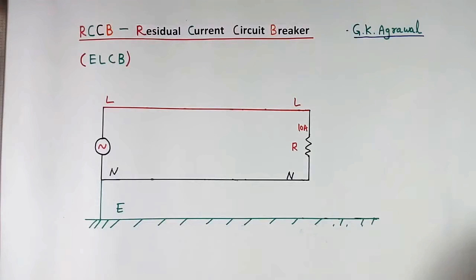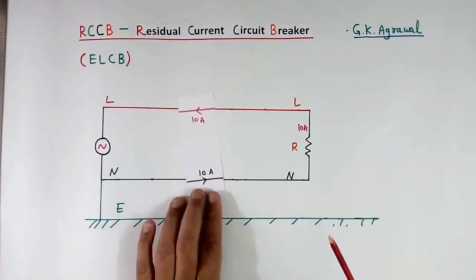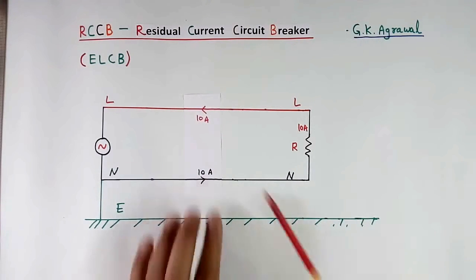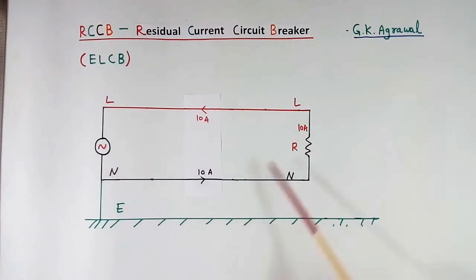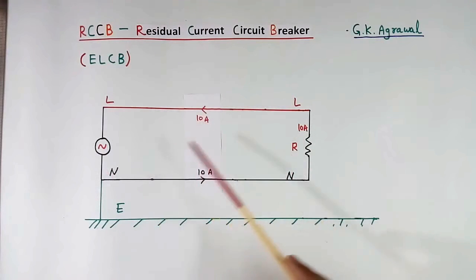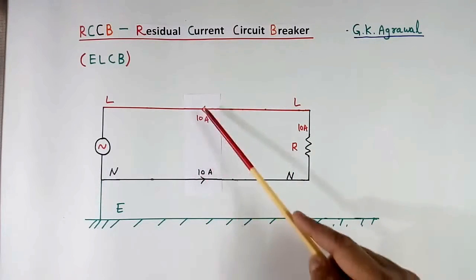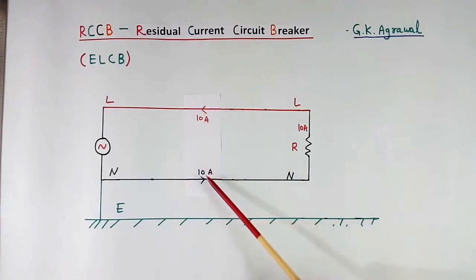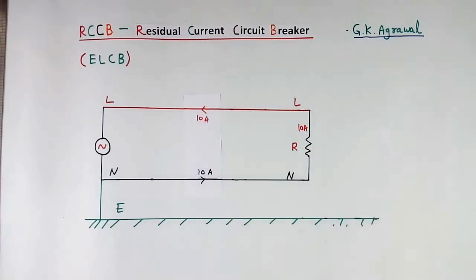If we add these 2 currents, the total current, or net current, or residual current, will be 0. When current flows in the other direction, again the summation of this current will be 0 — residual current will be 0.